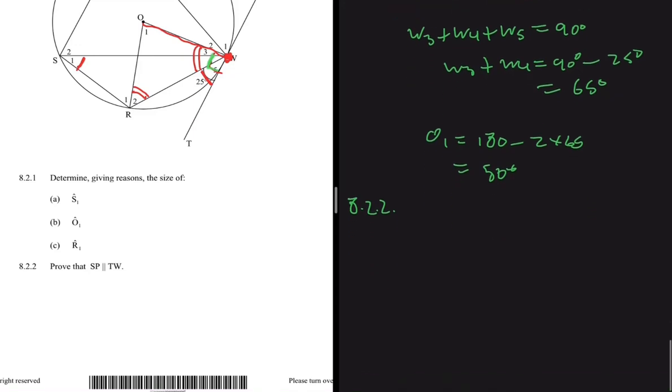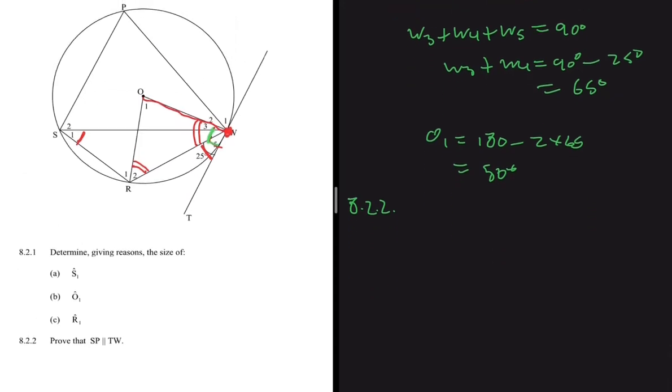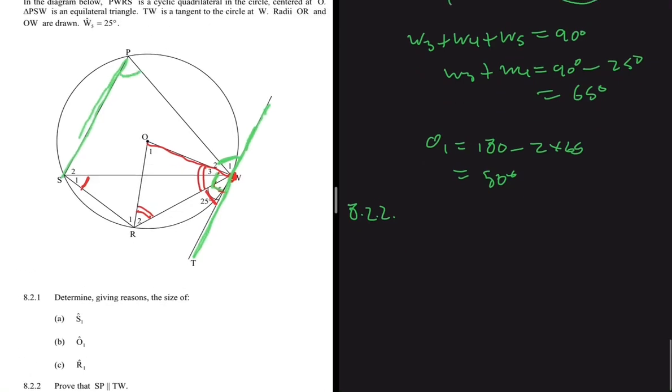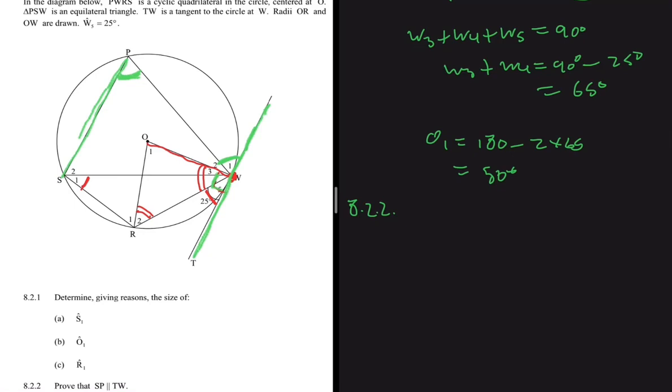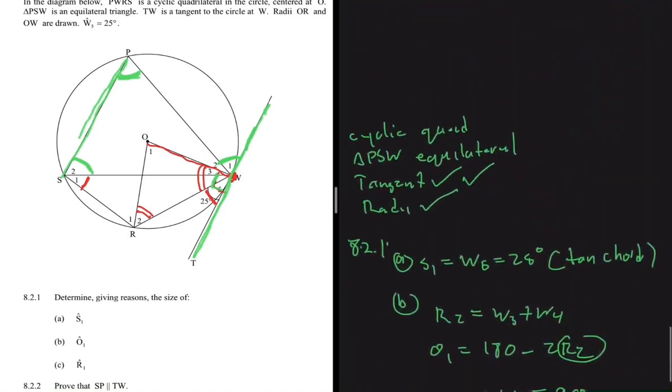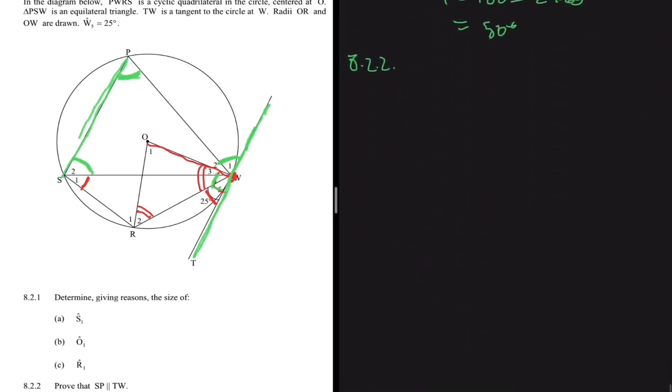8.2.2 says let's prove that SP is parallel to TW. Obviously we don't have coordinates here, so there's no way we're going to be calculating the gradient. We have to do that using angles somehow. If these two lines are parallel, then this angle w1 should be equal to this angle p here. But then at the same time w1 should be equal to s2. Why are we saying that? Tangent chord theorem again. We're sticking to the keyword. So now we can say that w1 equals s2.